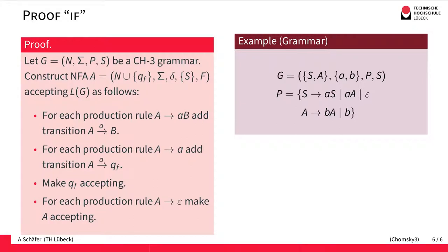We have three different types of production rules in the grammar, and for each type we define the corresponding transitions. For the first allowed production rule in Chomsky 3 grammars — replacing non-terminal A by terminal a and non-terminal B — we add a transition from state A to state B consuming the lowercase a from the input.